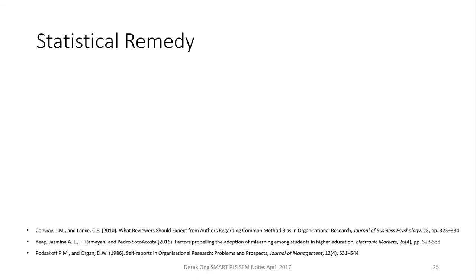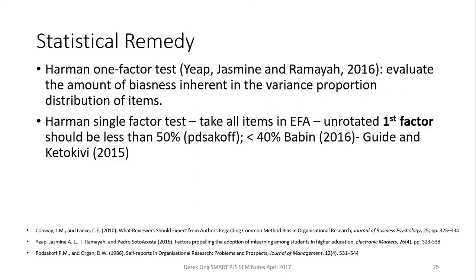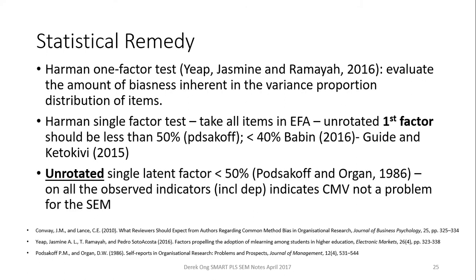Statistical remedy: if you have already collected your data, you can still use these remedies, but I must warn you that some of them are no longer acceptable in certain universities. Not every university has the same yardstick, so you can still get away with some of these procedures. One of them is called the Harman single factor test, whereby you evaluate the amount of bias inherent in the variance proportion of distribution of items. You take all the items in the EFA, including the dependent variable, and check for the unrotated first factor, making sure that everything is less than 50%. If that is so, it indicates that CMB is not a problem for the SEM.